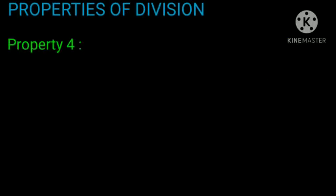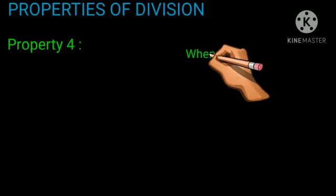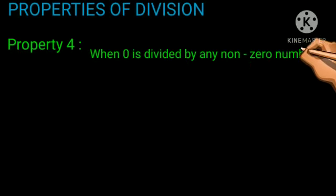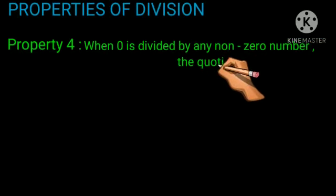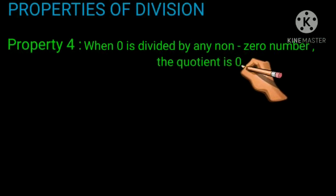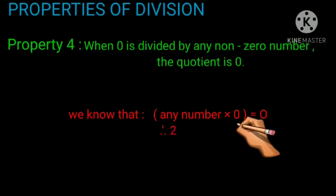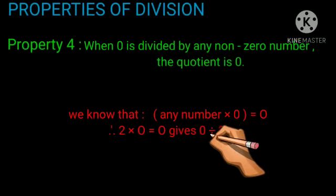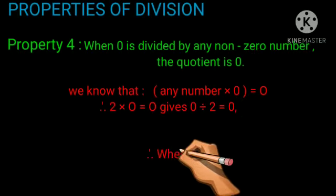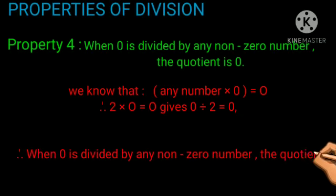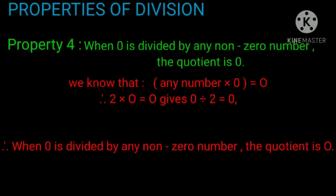Property 4: When 0 is divided by any non-zero number, the quotient is 0. We know that any number multiplied by 0 equals 0. Therefore, 2 multiplied by 0 equals 0, which gives us 0 divided by 2 equals 0. So when 0 is divided by any non-zero number, the quotient is 0.